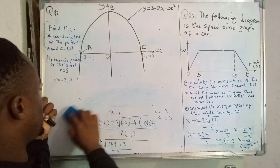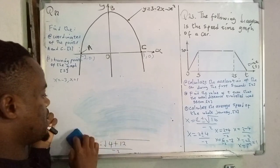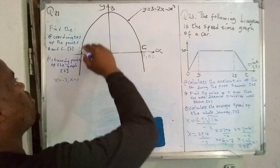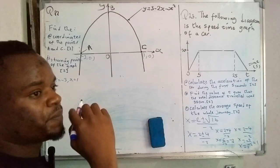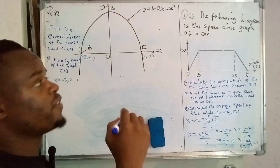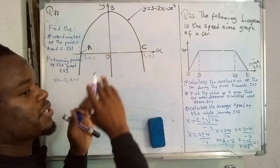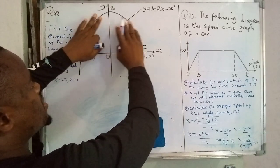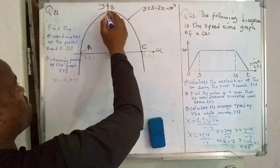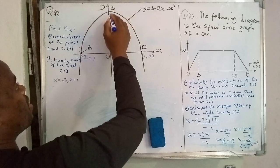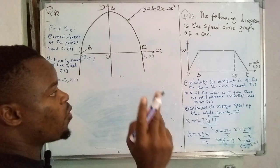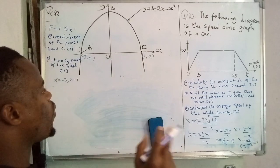Let's move on to number 2: determine the turning point of the graph. The turning point is the point at which a line would separate the parabola into two equal halves. We don't know its coordinates yet. Remember it will have two coordinates — the x and y coordinates.